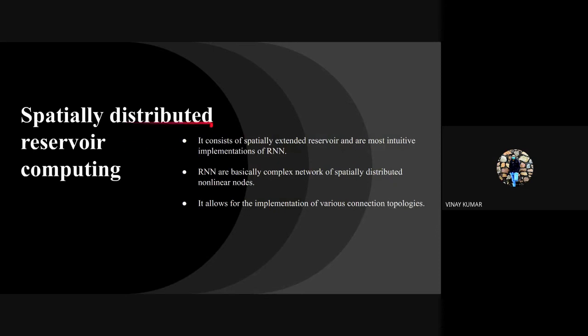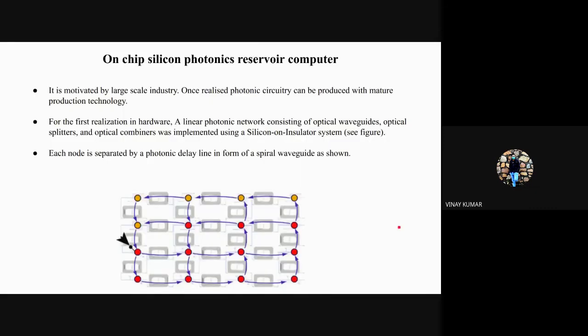Spatially distributed is very similar to RNN—it's basically a complex network of spatially distributed nonlinear nodes. It allows various connection topologies. One example of this is on-chip silicon photonics reservoir computer, motivated by large-scale industry. Once realized, this photonic circuitry can be produced with natural production technology.